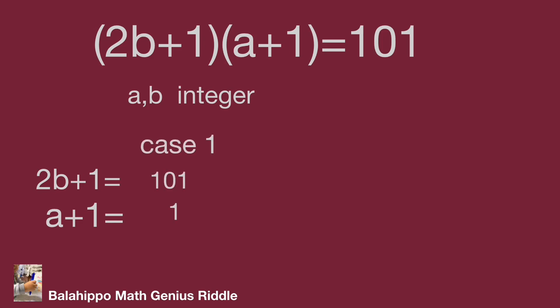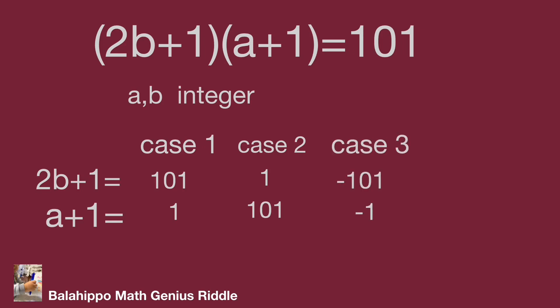Case 1: 2b plus 1 equal to 101 and a plus 1 equal to 1. Case 2: 2b plus 1 equal to 1 and a plus 1 equal to 101. Case 3: 2b plus 1 equal to minus 101 and a plus 1 equal to minus 1. Case 4: 2b plus 1 equal to minus 1 and a plus 1 equal to minus 101.